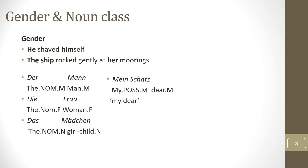Another example: 'mein Schatz' means 'my dear' and is used for a close intimate partner regardless of social gender. The word Schatz is grammatically masculine, so the possessive mein is the masculine form agreeing with the masculine noun Schatz. The feminine version would be 'meine.' Mein Schatz is grammatically masculine but has no link to social gender — it can be used for anyone near and dear to you, irrespective of the social gender they identify with.